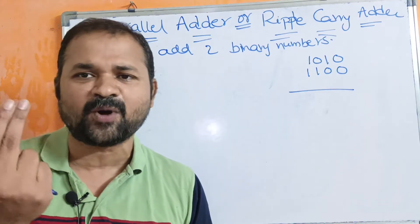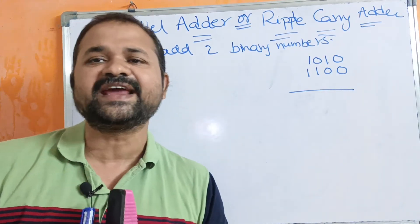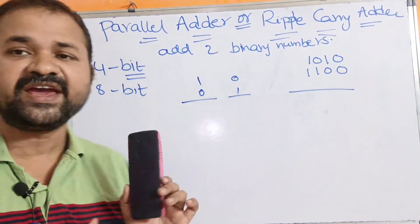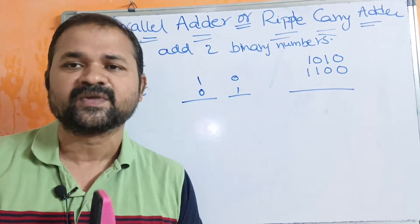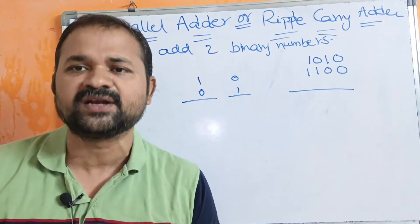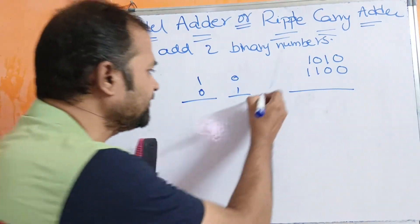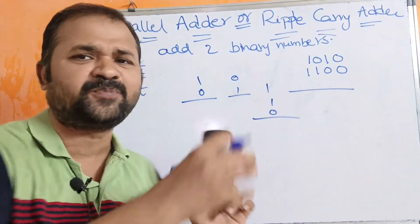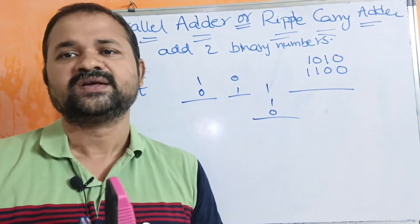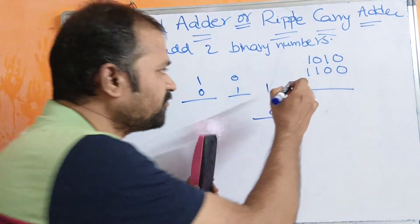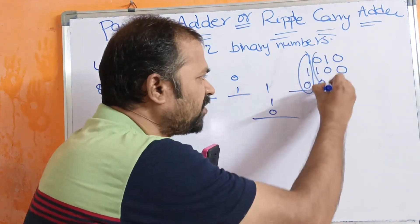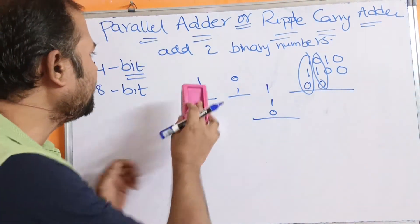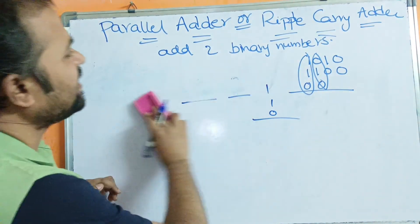We know that with the help of a half adder, we can add only 2 bits. Whereas with the help of a full adder, we can perform addition on 3 bits. When we add 2 bits, there is a possibility that we may get a carry value, so we need to add 3 bits. That's why we have to use a full adder. Now let us see what a parallel adder is.